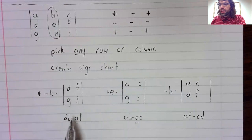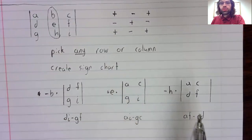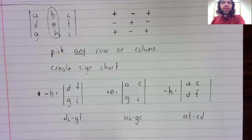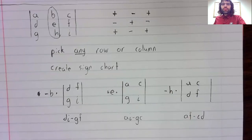So negative b times this, plus e times this, minus h times this, is the determinant. I warned you when I was sort of talking about why determinants were out of favor. I warned you that they were messy.